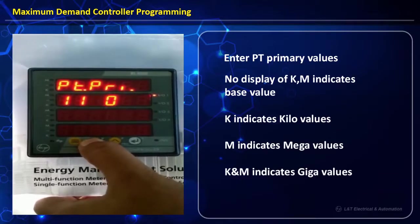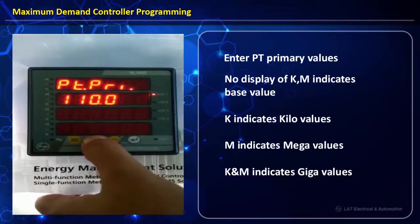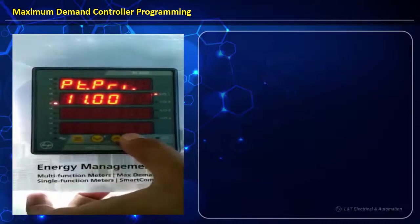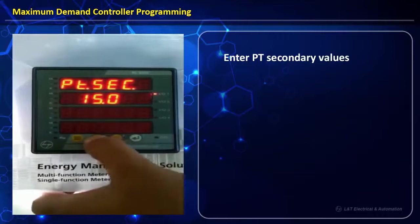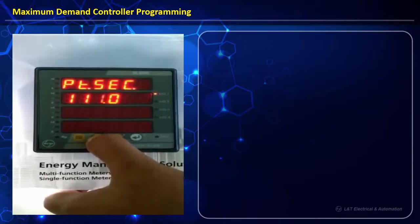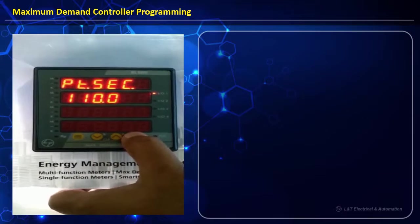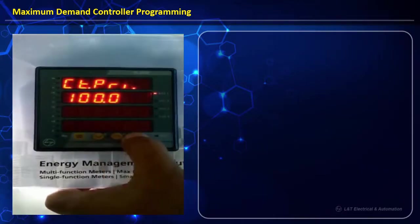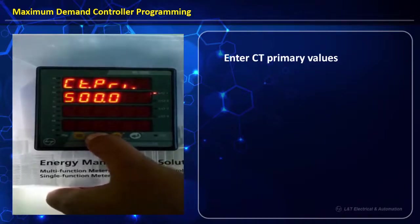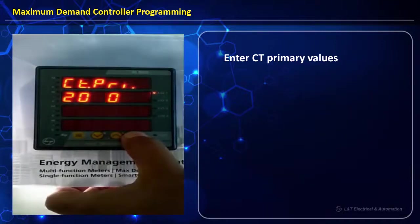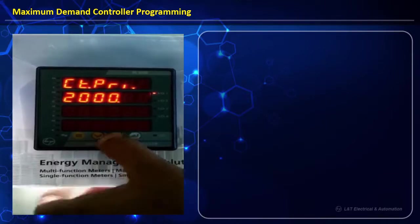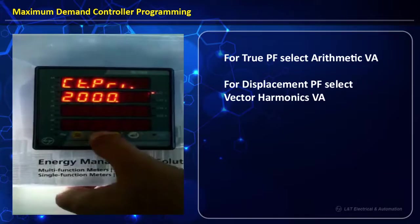Always remember that towards the end we will have to set the decimal such that it shows 11.00 with the k indicator on. Next we move to PT secondary and change it from 415 to 110. Then we set CT primary to 2000, choosing the appropriate decimal value without a k indicator. CT secondary is set to 5.